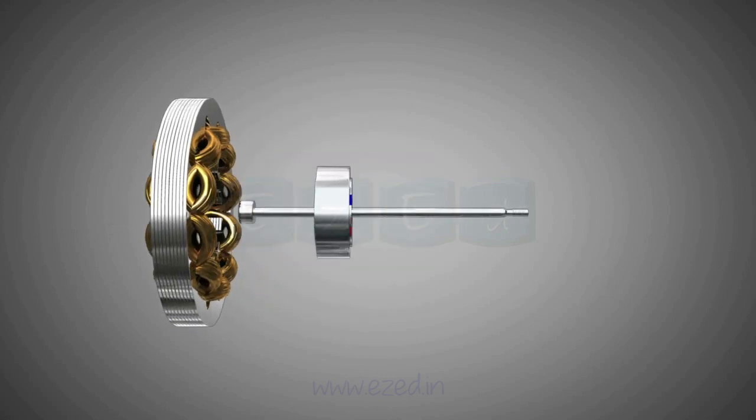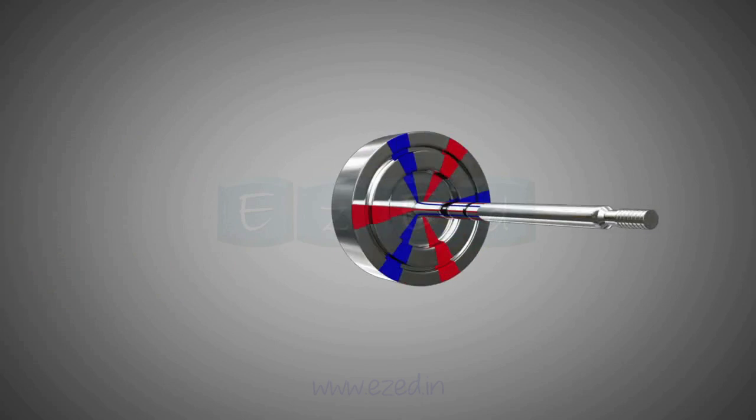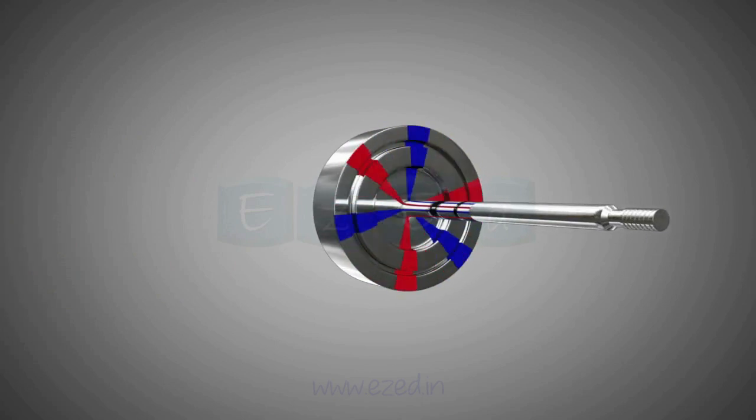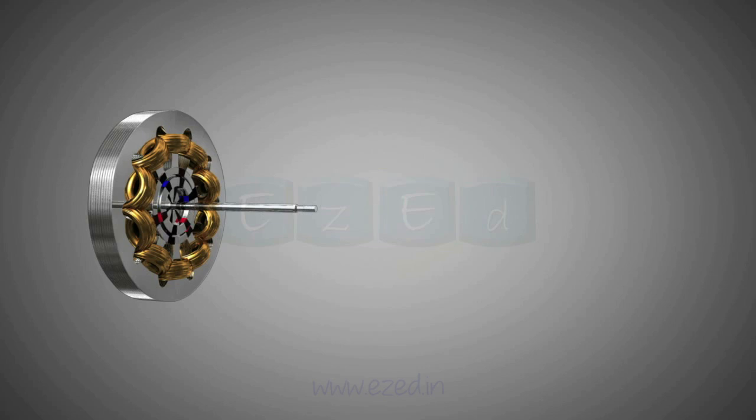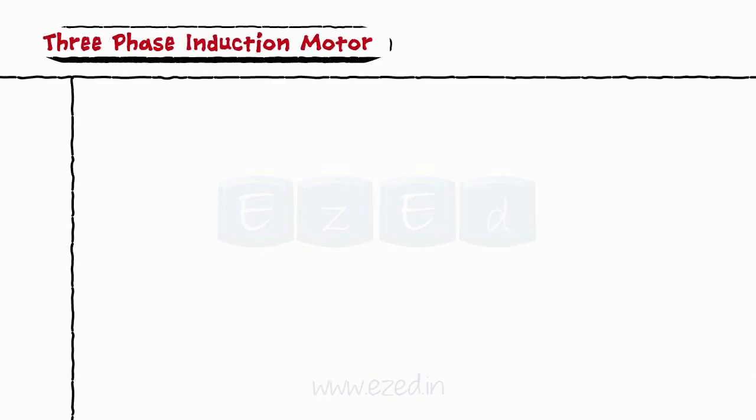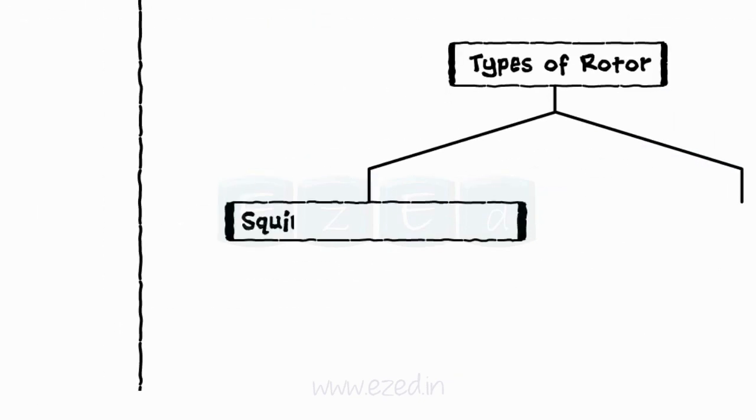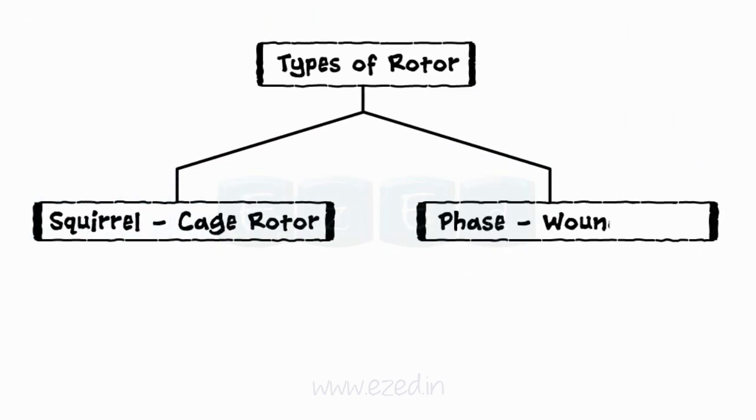A rotor is a part of a motor which acts as an inner cylindrical core and rotates continuously once the motor is started. It is always kept inside the stator. Depending on the types of windings used, the rotors are categorized in two types: squirrel cage rotor and phase wound rotor.